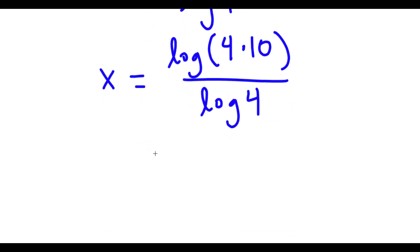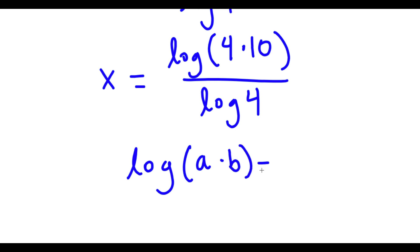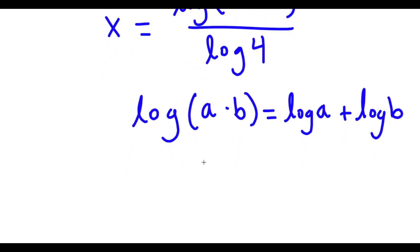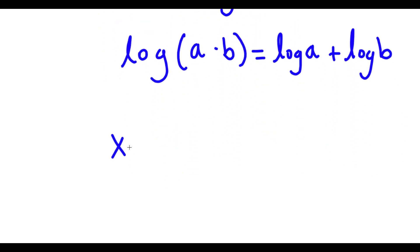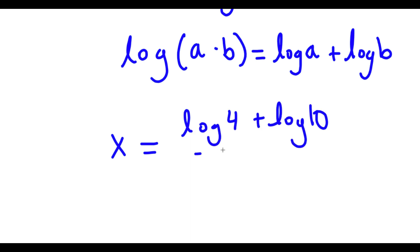If I have something in the form log a times b, this is equal to log a plus log b. So in this case, I have log of 4 times 10, so this is equal to log 4 plus log 10. And now I have this over log 4.